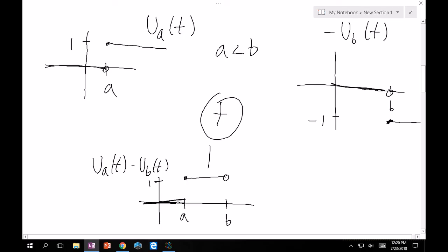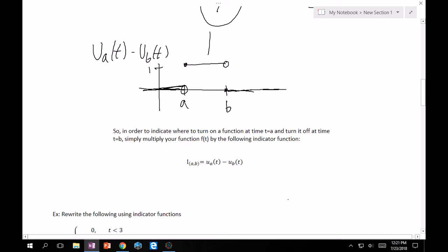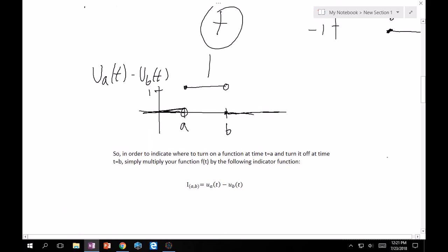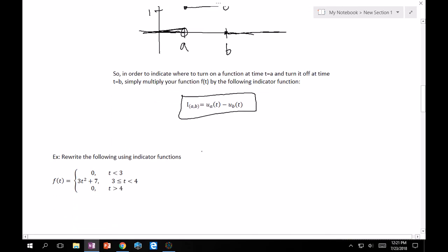By the way, that's 1 as well. And then once you hit b, it's now 1 plus minus 1, right? And so, at this point, it closes and it stops at 0. Therefore, you're now indicating that the function would be turned on at a and turned off at b. And this is what's called an indicator function. You just indicate where to turn it on and where to turn it off. And you just simply multiply your function f of t by this magic formula right here. That's pretty cool, honestly.